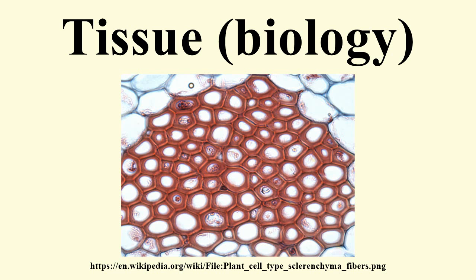Animal tissues are grouped into four basic types: connective, muscle, nervous, and epithelial. Multiple tissue types compose organs and body structures. While all animals can generally be considered to contain the four tissue types, the manifestation of these tissues can differ depending on the type of organism. For example, the origin of the cells comprising a particular tissue type may differ developmentally for different classifications of animals.